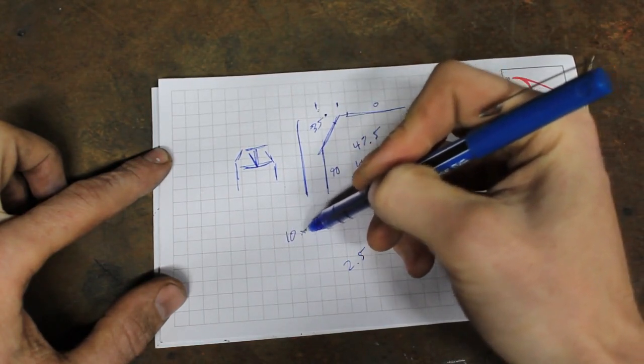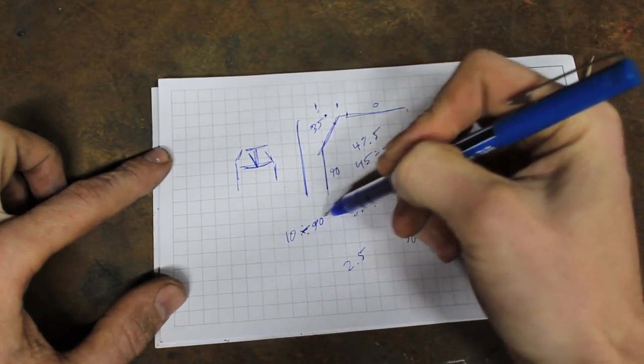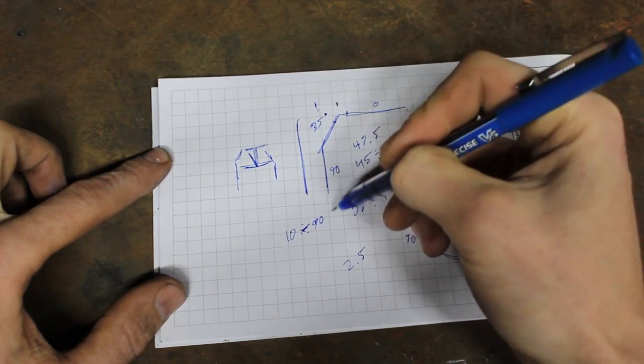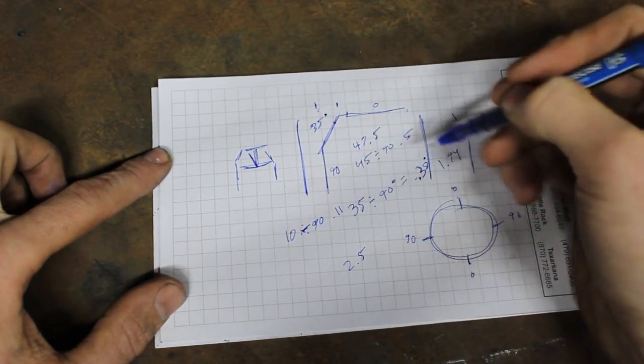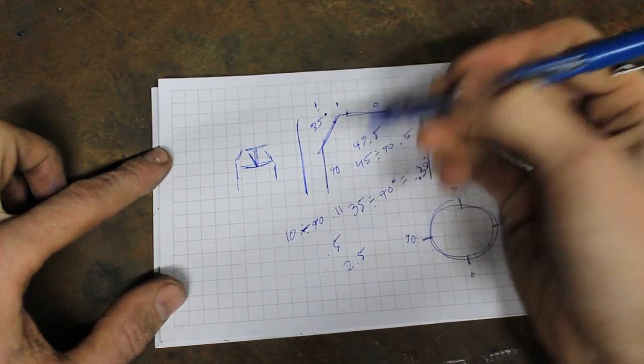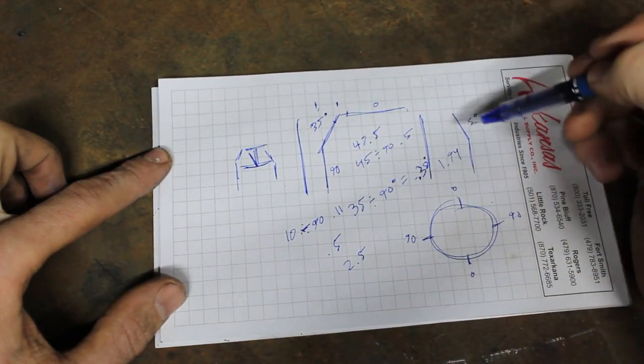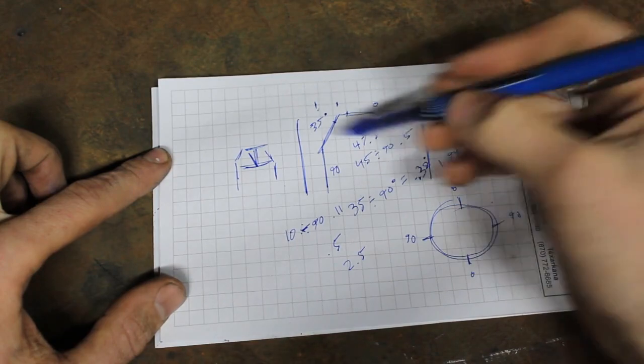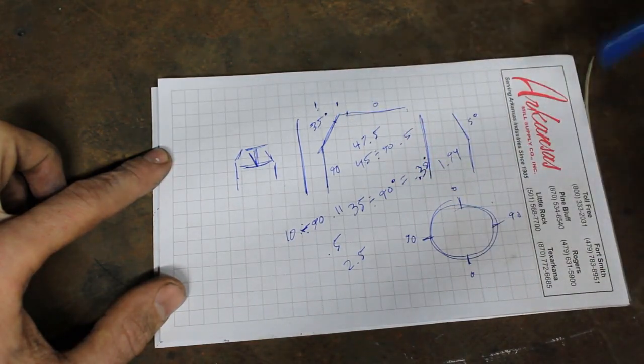10 divided by 90 is 0.11, times 5. Basically, it's a half a degree. You would then bend this to be 35 and a half degrees. So on and so forth.